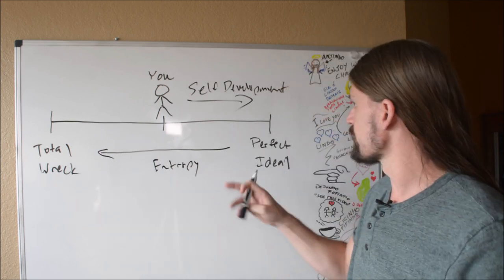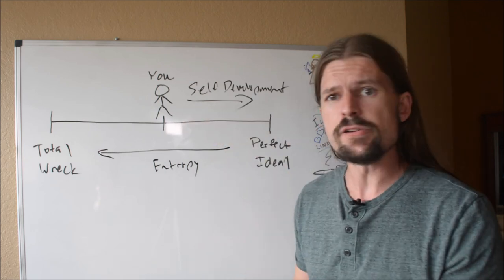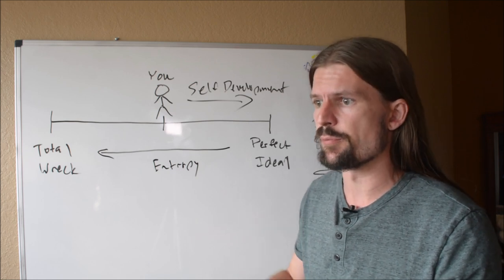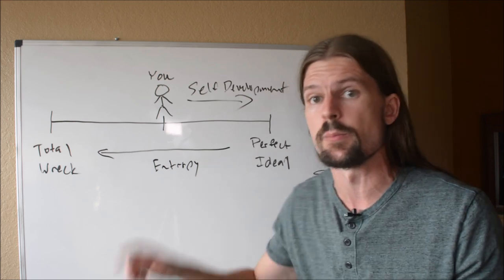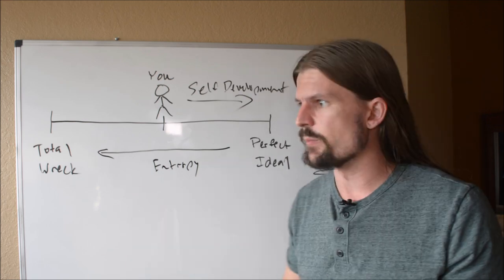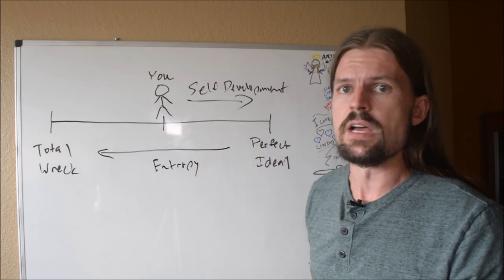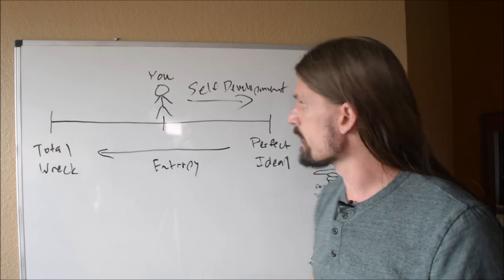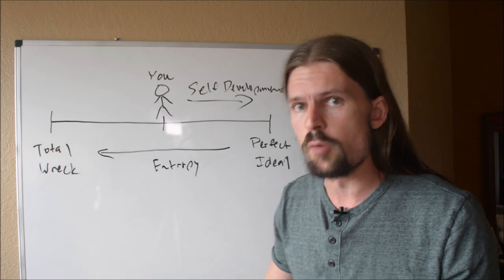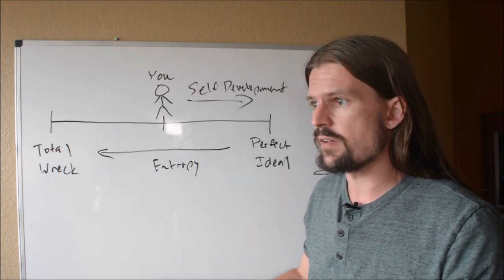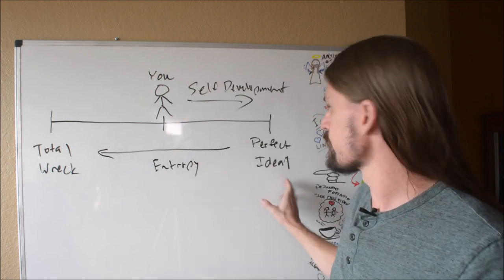So you always have to be developing yourself. You always have to be moving in this direction. But here's the key that the super self-disciplined people that are always telling you to beat yourself up and grind all the time are missing. And that is that you can accept yourself while you're walking in this direction. You don't have to be here to accept yourself. You can accept that where you are now is the perfect place for you in this moment. And that you're going to take a few steps in this direction today. And then you're going to be just a little bit closer to that perfect ideal.